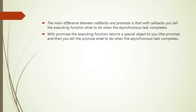As we have seen the callback and promises with examples, the main difference between them is that with callbacks you tell the executing function what to do when the asynchronous task completes, whereas with promises the executing function returns a special object — the promise — and then you tell the promise what to do when the asynchronous task completes. Thank you.